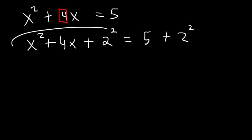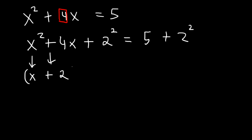Now to factor this expression, x squared plus 4x plus 4, it's going to be x, and then whatever this sign is, plus this number before you square it: x plus 2, squared. If you factor x squared plus 4x plus 4, it's x plus 2 times x plus 2. Two numbers that multiply to 4 and add to 4 is 2 and 2. On the right side, we have 5 plus 2 squared, which is 4, and 5 plus 4 is 9.